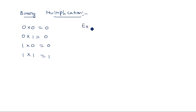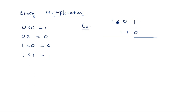For example, multiplying 1 1 0 1 by 1 1 0 — that is 13 times 6. First, multiply all digits of 1 1 0 1 by the rightmost digit 0, giving four zeros. Then multiply 1 1 0 1 by the next digit 1, giving 1 1 0 1 shifted one position left.